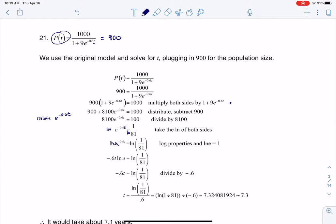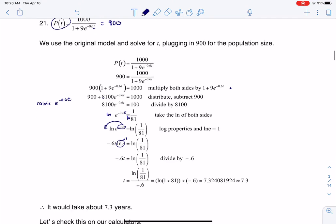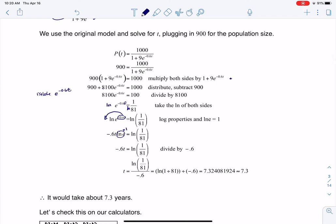Technically what you see me doing is using the power rule, so I can bring that power down out in front through multiplication. But ln of e is 1, so that's why you see that going away, and that leaves me with negative 0.6t equaling the ln of 1 over 81. So I'm going to divide by negative 0.6, and once I do all of that on my calculator, I get 7.3 years. I opted to check it on my calculator